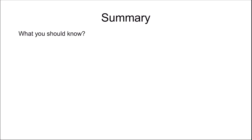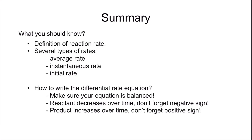To summarize this video: you should know how to define the reaction rate, and there are three types of rates — to determine them from a graph, draw the appropriate tangent line based on the type of rate asked. You also learned how to write the differential rate equation: the equation must be balanced, reactants have a negative sign (concentration decreases over time), and products have a positive sign (concentration increases over time). See you in the next video!